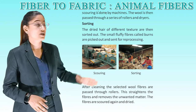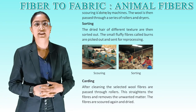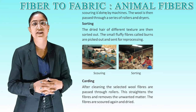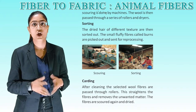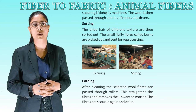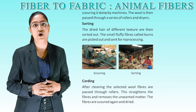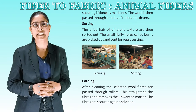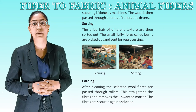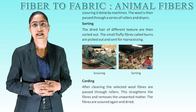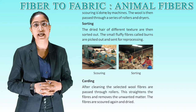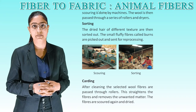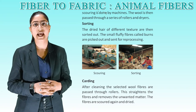Next is sorting: the dried hair of different textures are then sorted out. The small fluffy fibers called burrs are picked out and sent for reprocessing. Carding: after cleaning the selected wool, fibers are passed through rollers. This straightens the fibers and removes unwanted matter. The fibers are scoured again and dried.